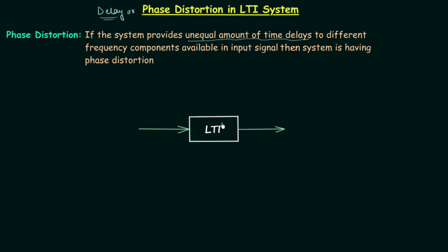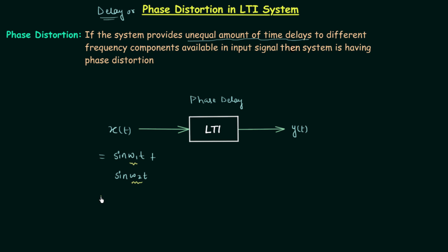In this example we have an LTI system that is providing a phase delay. Let's say the input to the system is x(t) and the output is y(t). x(t) is equal to sin(ω₁t) plus sin(ω₂t). So this is our input signal and you can see we have different frequency components. In the first term the frequency is ω₁, in the second term the frequency is ω₂, and ω₁ is not the same as ω₂. So we have an input in which there are different frequency components available. Now we will focus on the output.